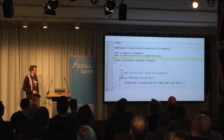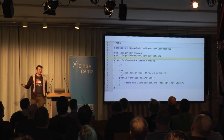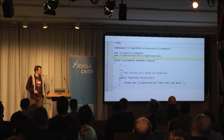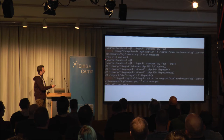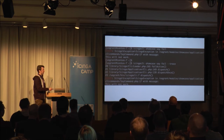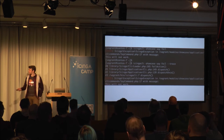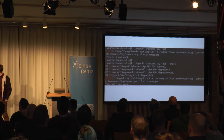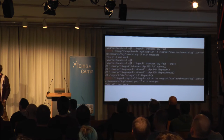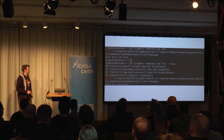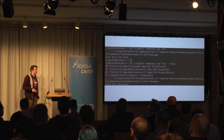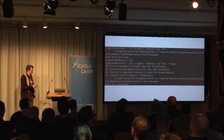We create a small example: a 'fail' action that just throws an exception. If we call this action without --trace, we just get a simple error message 'this will not work'. If we put --trace, we get the full trace. When developing a CLI command, it's always a good choice to use --trace, because if an exception happens you will know exactly where it comes from.